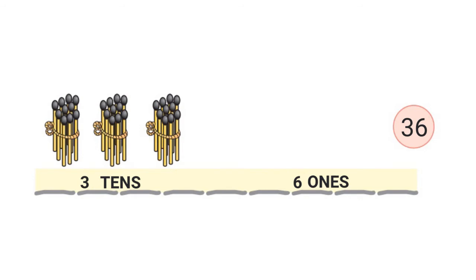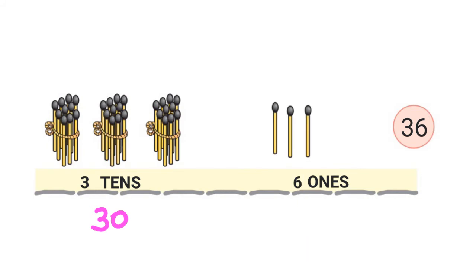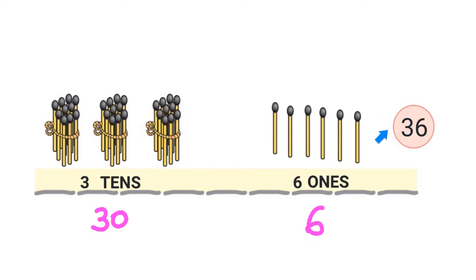I have 36 matchsticks in all. I have 3 tens — 3 tens are 30. And I have 6 ones. Let me draw 6 ones: 1, 2, 3, 4, 5, 6. I have 6 ones. 36. So I have 36 matchsticks in all.